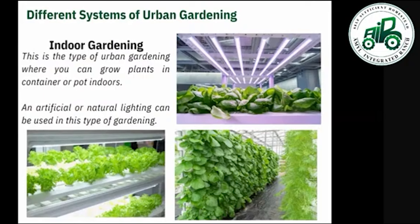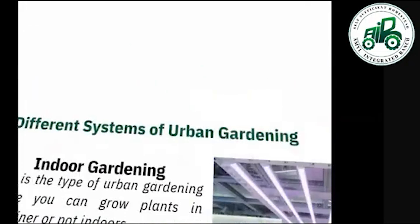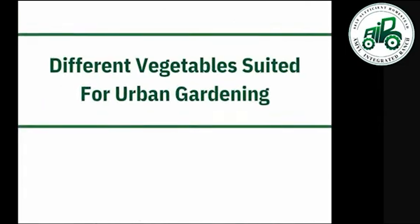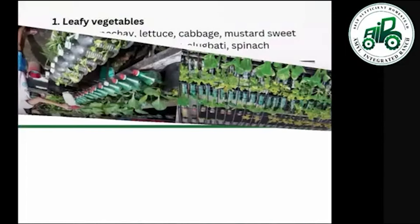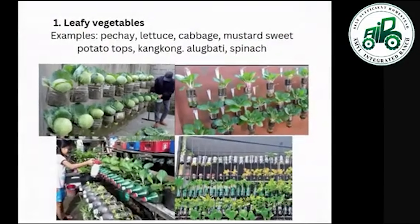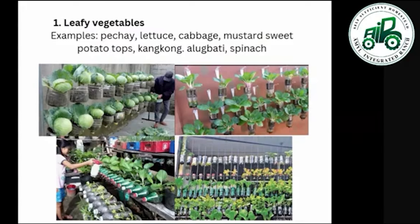Different vegetables suited for urban gardening: leafy vegetables include petchay, lettuce, cabbage, mustard, sweet potato tops, kangkong, Malabar spinach (alugbati), and spinach.